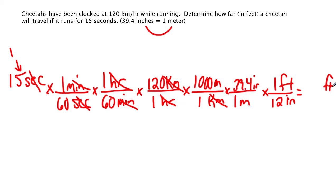So when you're all done and you do the math, 15 times 1 divided by 60 times 1 divided by 60 times 120 divided by 1 times 1,000 divided by 1 times 39.4 divided by 1 times 1 divided by 12. When you're all done, you should end up with how many feet this little cheetah can travel in 15 seconds.